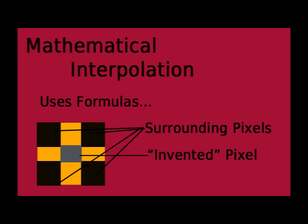Looking deeper into mathematical interpolation: it uses color averages of different pixels around the pixel that is to be invented. There are very specific mathematical formulas used, and a variety of different approaches with names such as nearest neighbor, bilinear, bicubic, bicubic smoother, and bicubic sharper. These methods can be made more complex by changing the formula to include pixels further away from the pixel being invented and by weighting or adjusting their influence accordingly.